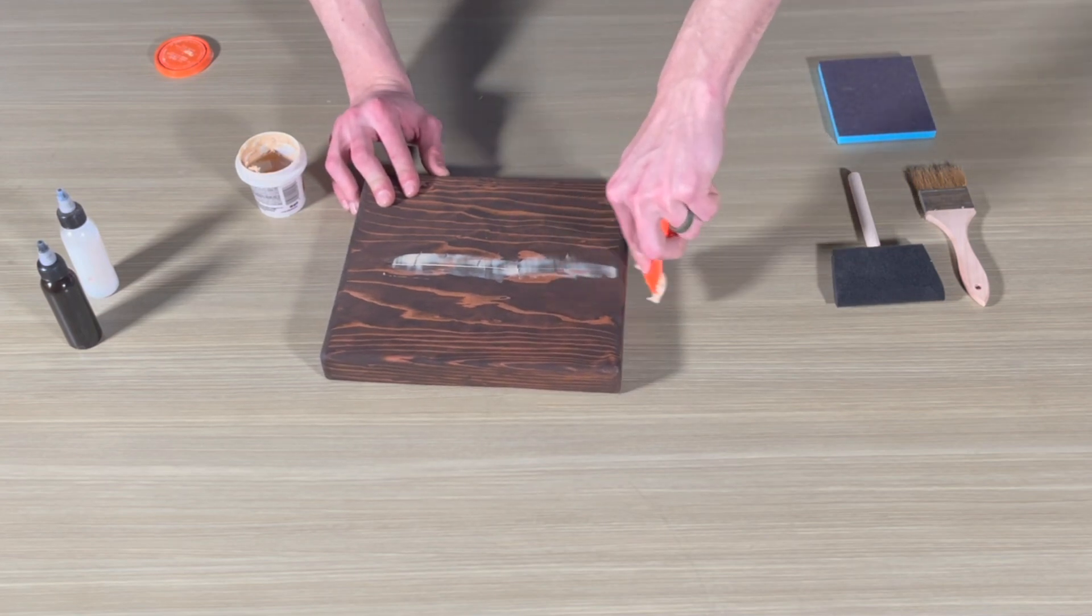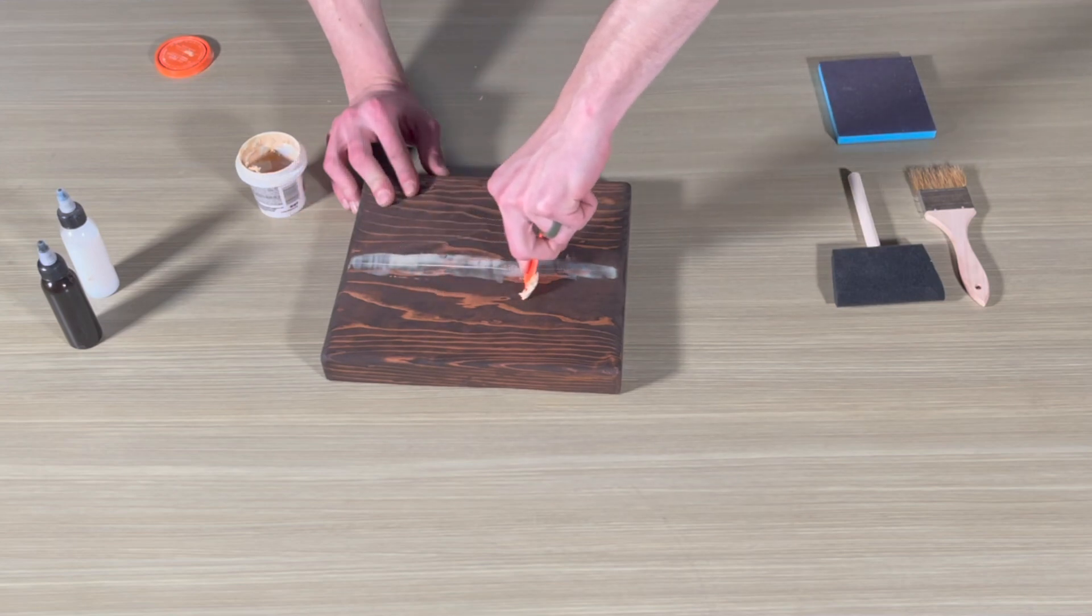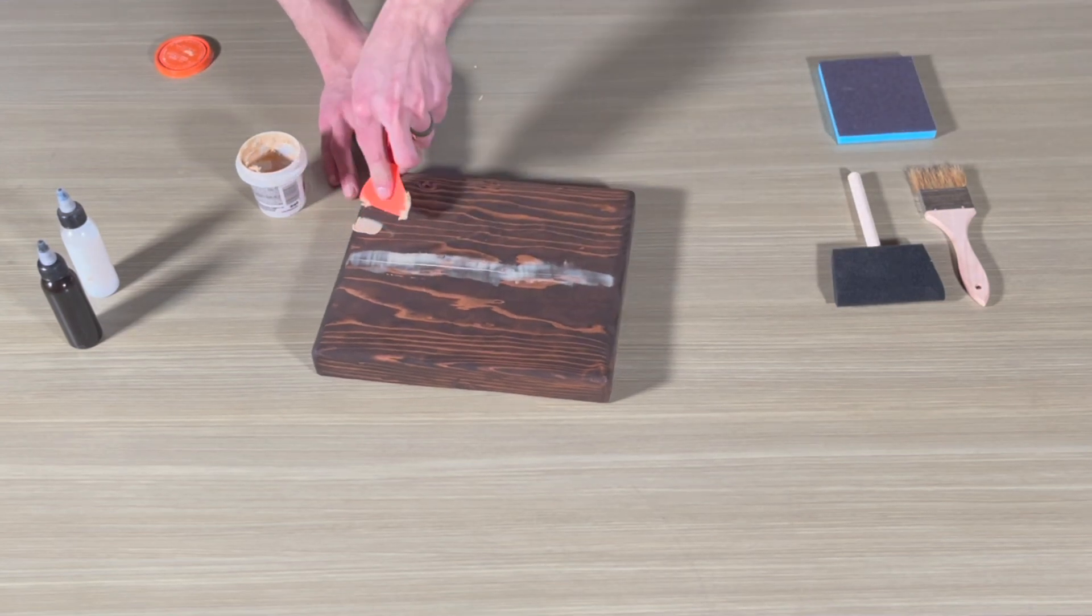Now wait 15 minutes for shallow cracks and knots and at least two hours for deeper flaws to allow the wood filler to fully dry.